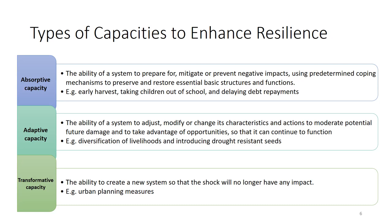Transformative capacity is the ability to create a new system so that the shock will no longer have any impact. For example, infrastructure and urban planning measures to reduce the probability of floods affecting communities — you plan and build infrastructure so that you don't face the impact of flash floods or any floods which may affect communities.